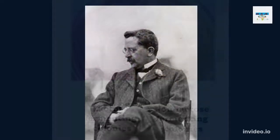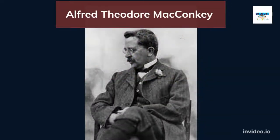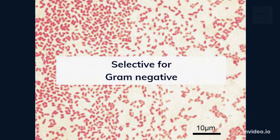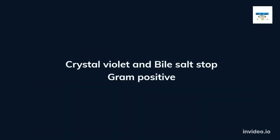The McConkie medium was developed by Alfred Theodore McConkie in 1900. McConkie agar is selective because it contains crystal violet dye and bile salts, which stop the growth of gram-positive bacteria. This only allows gram-negative species, which have a relatively bile-resistant outer membrane, to form colonies on McConkie agar.